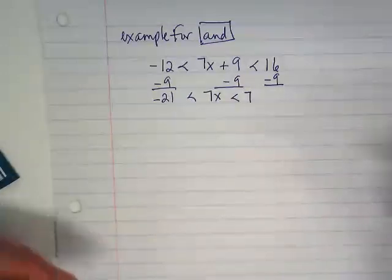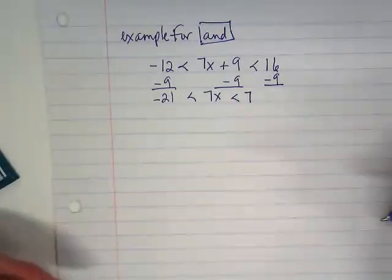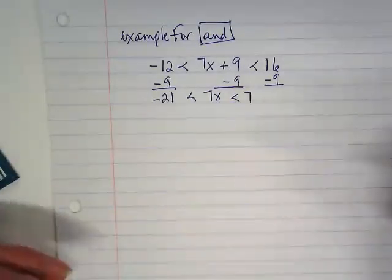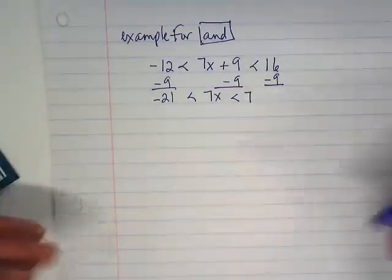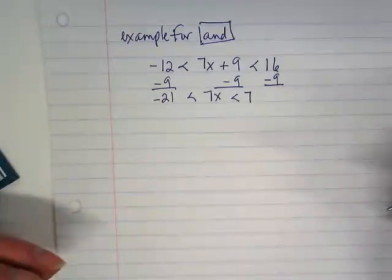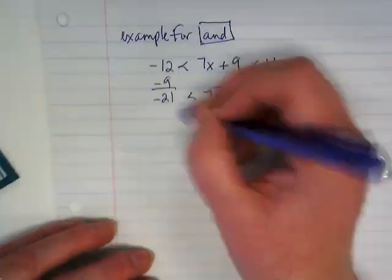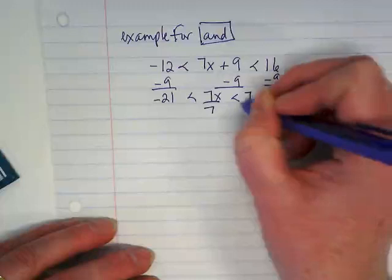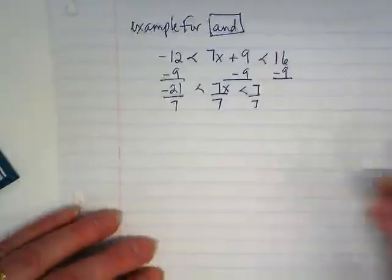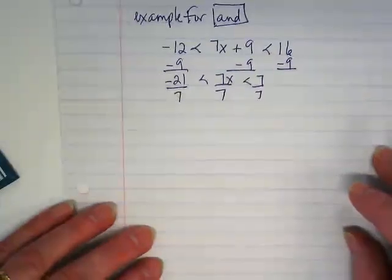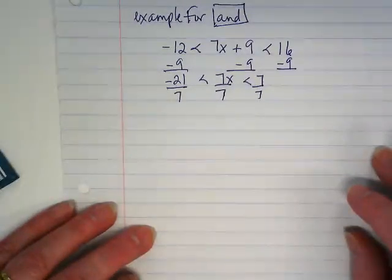Usually with these they won't end up with fractions, although there are those weird ones. Does this make sense, that as we subtracted this 9 we ended up with things that will divide by 7? Because our next move is divide by 7. We gotta get the x alone.